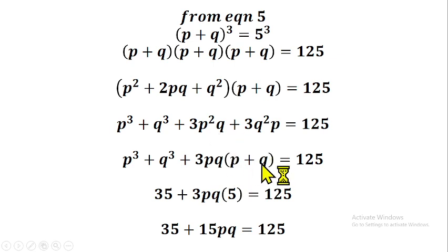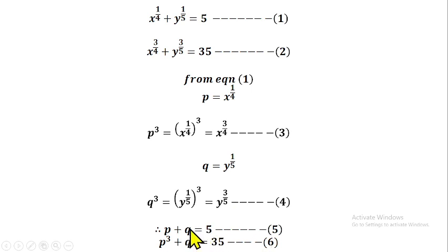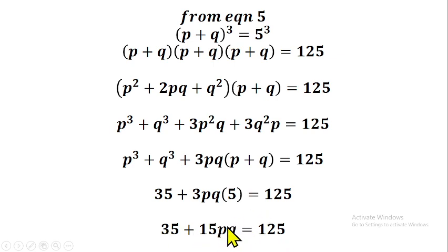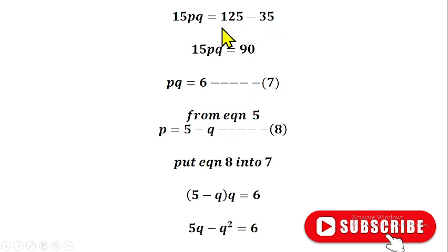From the expanded expression, we factorize 3pq from the remaining terms, giving us: p cubed plus q cubed plus 3pq times (p plus q) equals 125. From equations five and six, p plus q is five and p cubed plus q cubed is 35. Substituting: 35 plus 3pq times five equals 125, so 35 plus 15pq equals 125. This gives 15pq equals 90, and dividing both sides by 15, pq equals 6, which we call equation seven.